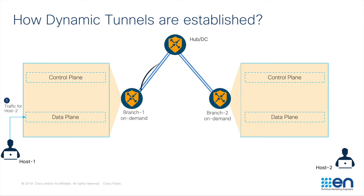Traffic from host 1, which is behind branch 1, is sent to host 2, which is behind branch 2. Initially, the traffic will flow through the backup path which is the hub location. This traffic is now received by host 2 on the service side VPN of branch 2. On branch 1, the data plane will send a tunnel setup message towards the control plane.